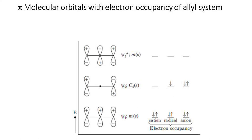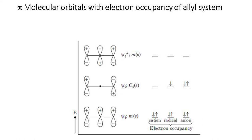In the case of the allyl radical, there are 3 pi electrons. Psi 2 has an odd number of electrons and psi 3 is unoccupied. Therefore psi 2 and psi 3 are considered as the frontier molecular orbitals of the allyl radical.